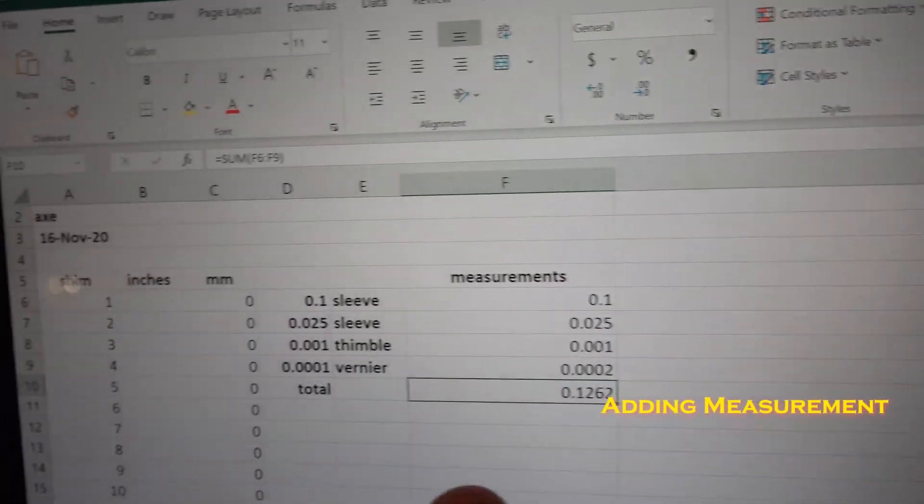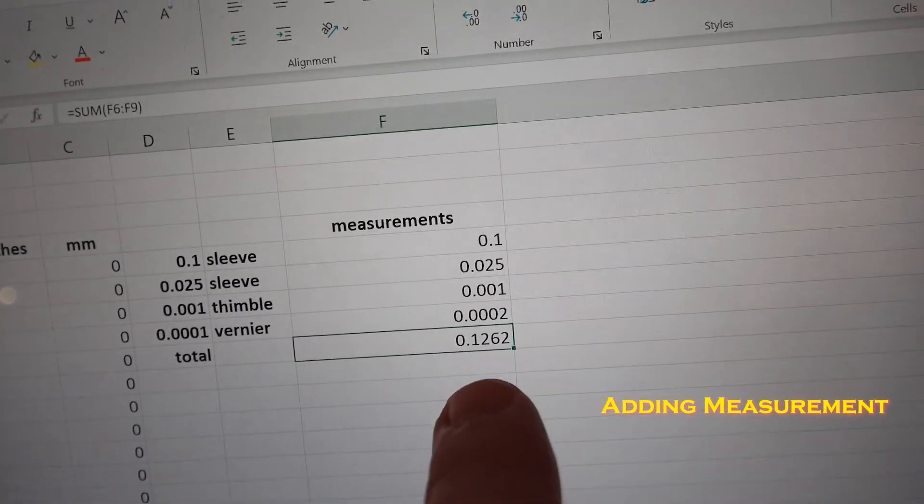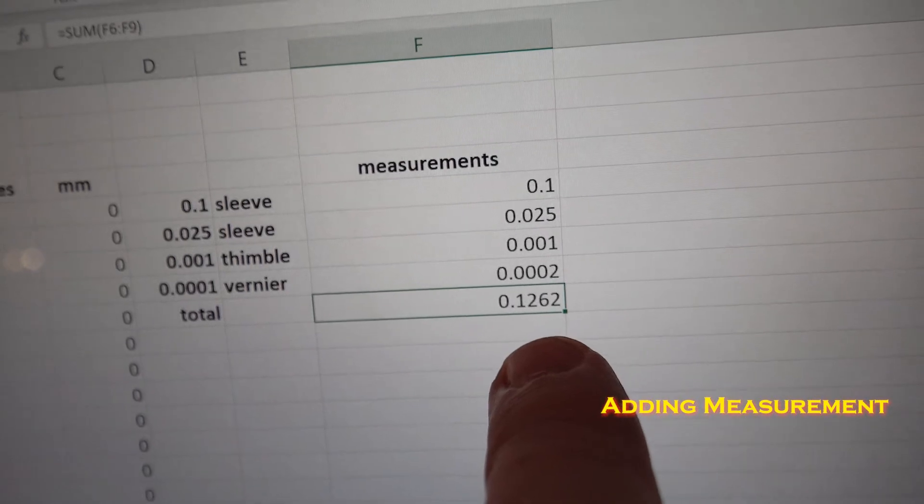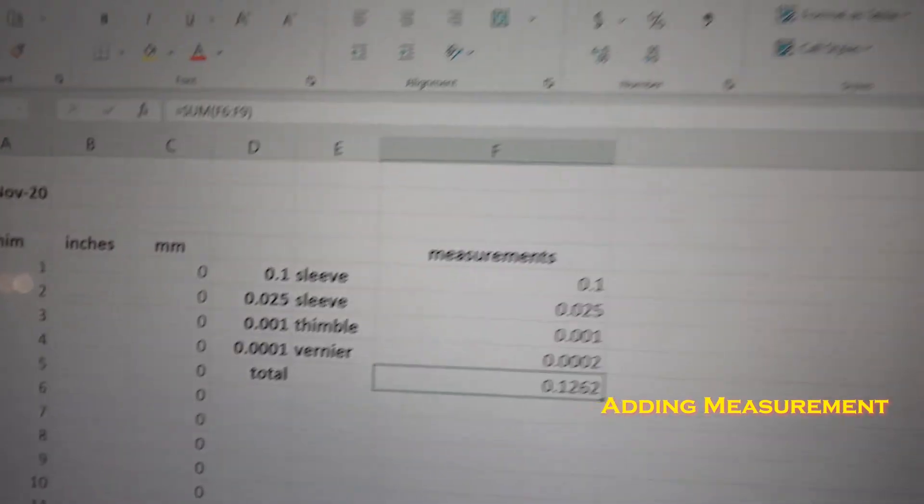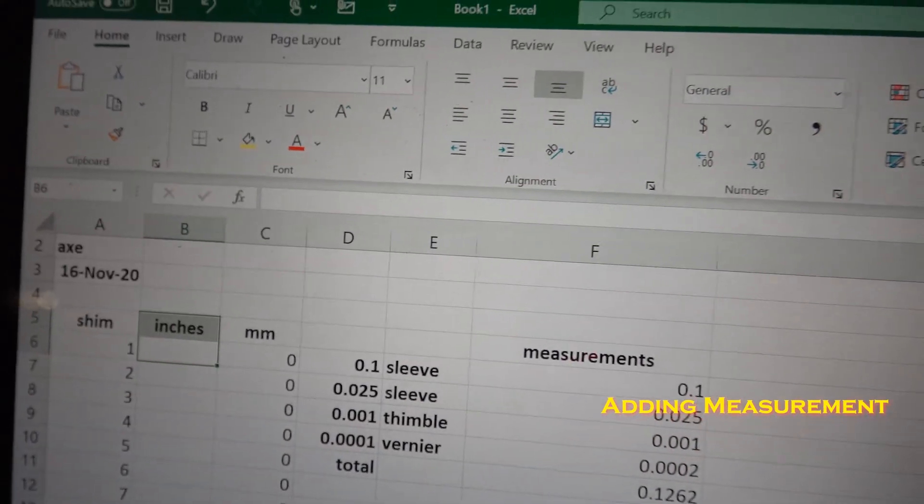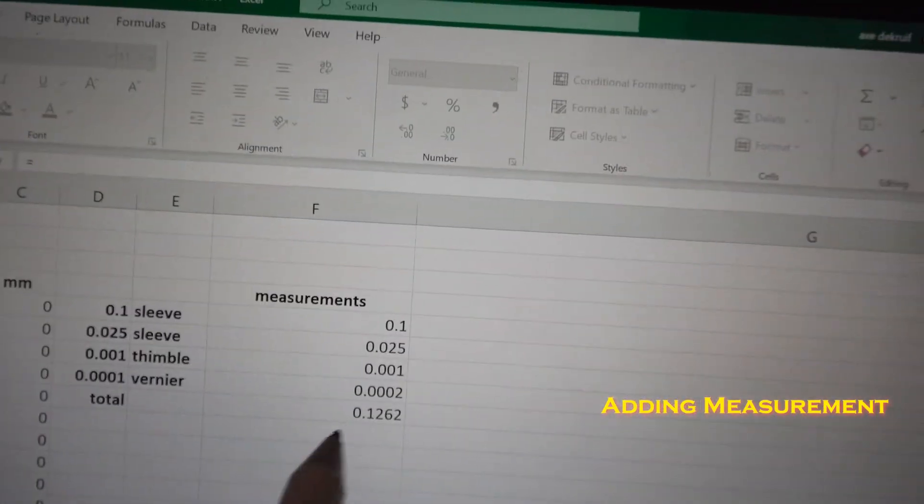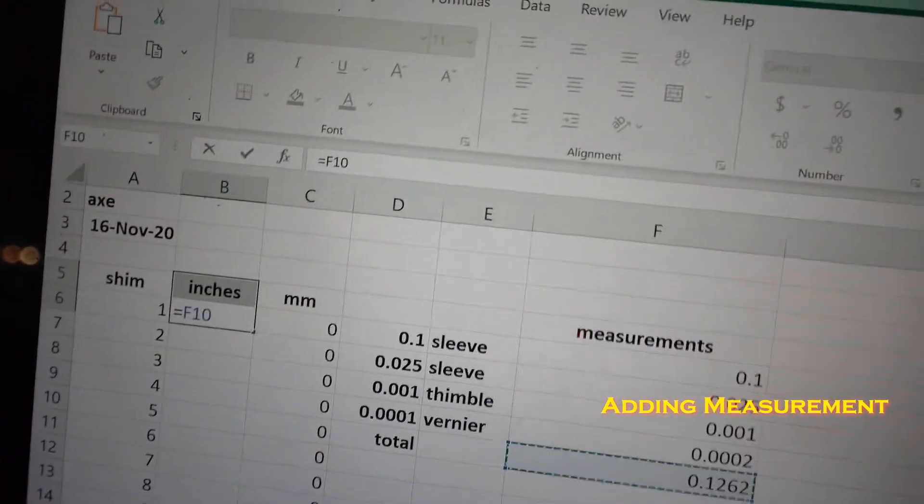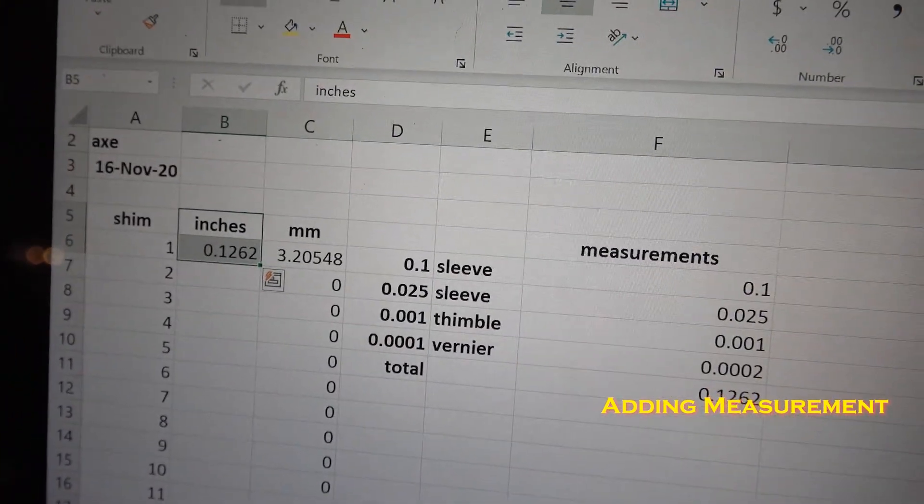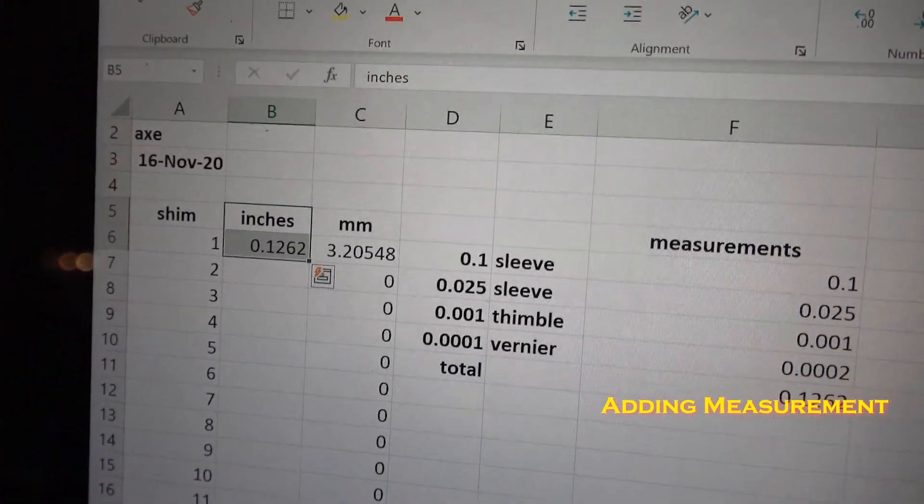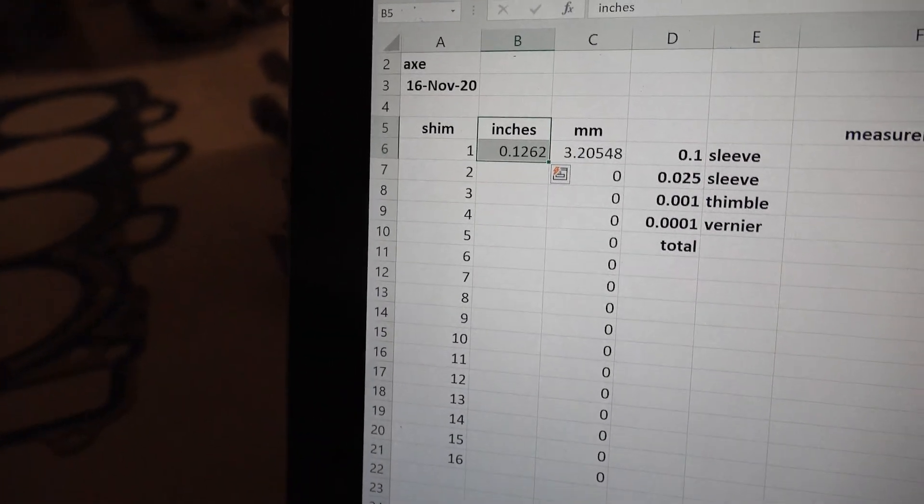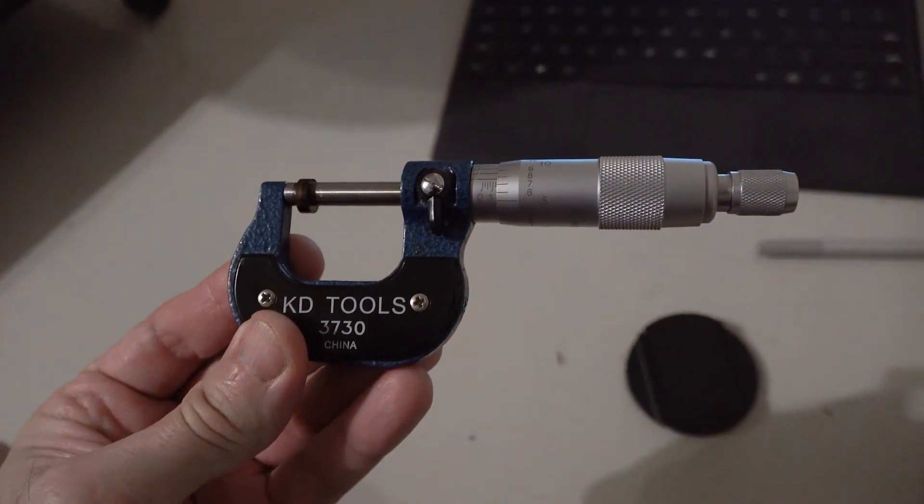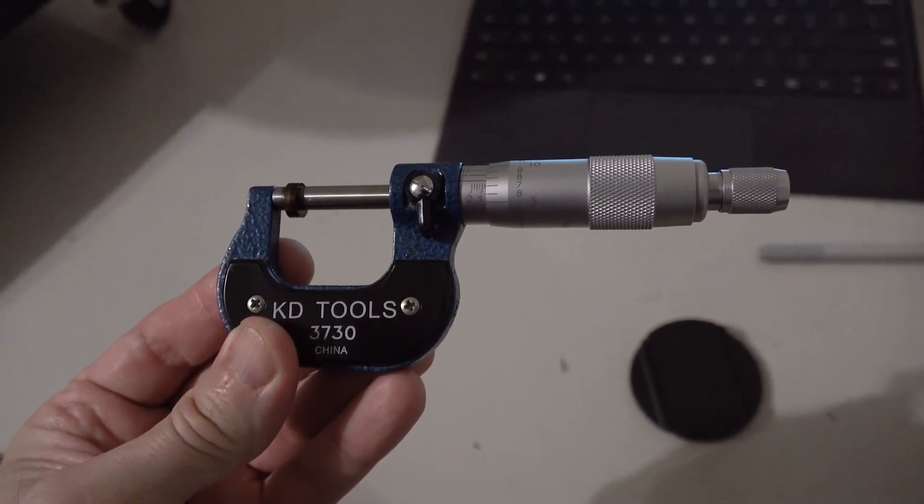Now you can see in this spreadsheet, I already had the math pre-populated so that it just sums up those values, and then you get a number of 0.1262 inches. I can take that number, enter it in over here, and then it calculates out that it's about 3.2 millimeters for me. I'll repeat this on down the line for the 16 shims. And that's how you use a vernier micrometer to measure a valve shim.